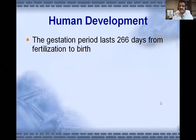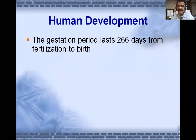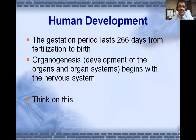Human development: the gestation period lasts 266 days from fertilization to birth, which is 38 weeks. If counted from the last menstrual period, it is 280 days or 40 weeks — nine months and 15 days. Organogenesis means development of organs and organ systems, which begins with the nervous system first, as it is the highest controlling and coordinating system. Different animals have different gestation periods — dogs, cats, and elephants all differ from humans.